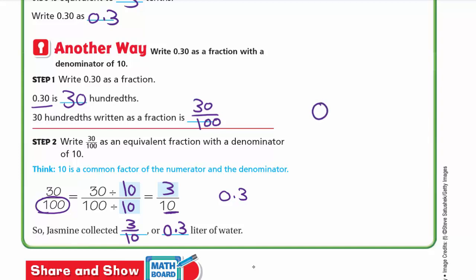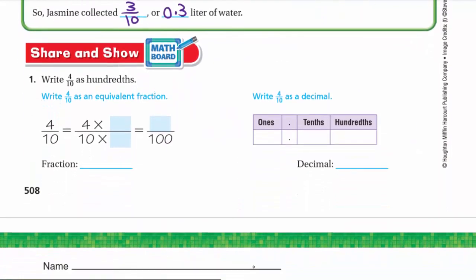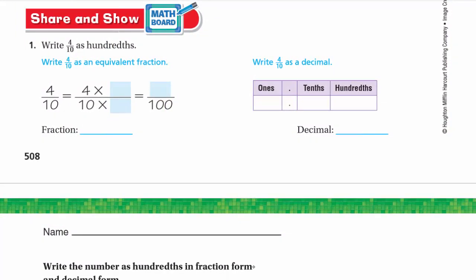To make it simple: 0.30 is 30 hundredths — to convert to tenths, just cancel the trailing zero to get 0.3, which is 3 tenths. If you have 0.5 and want hundredths, simply add one zero to get 0.50. For the Share and Show: write 4 tenths as hundredths. We multiply both numerator and denominator by 10: 4 times 10 is 40, so this is 40 over 100.